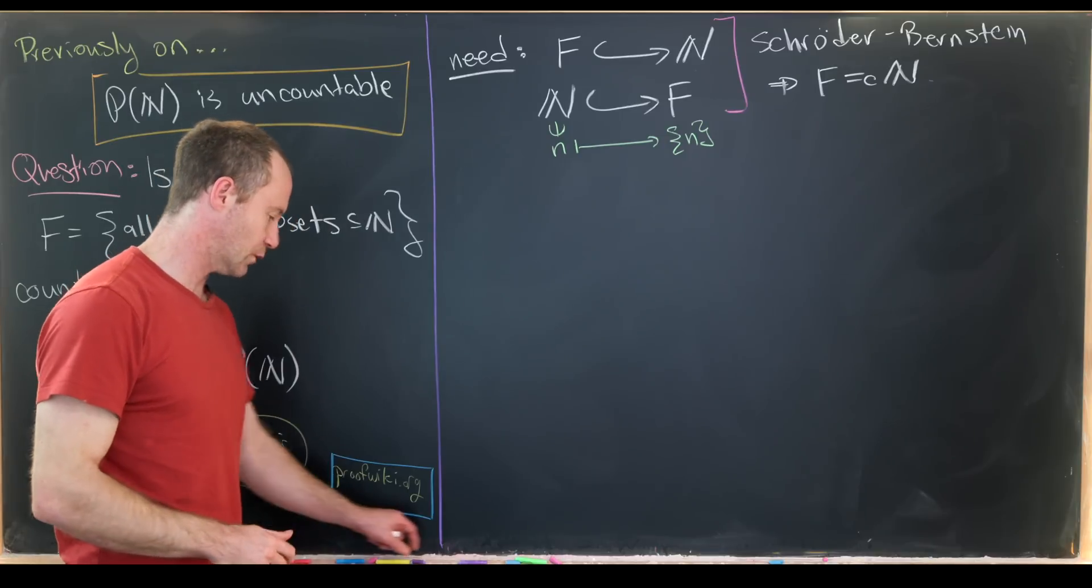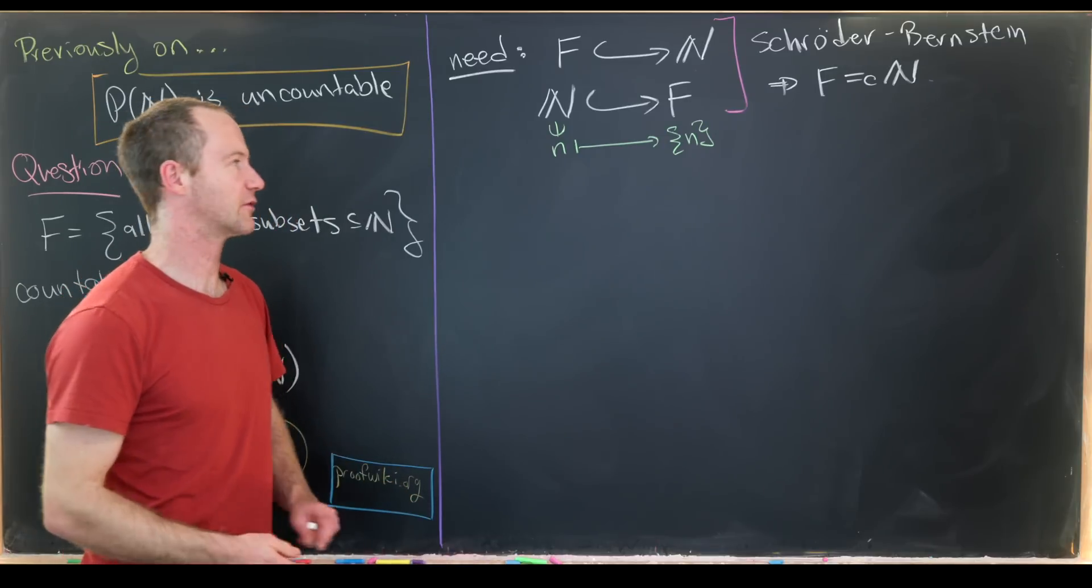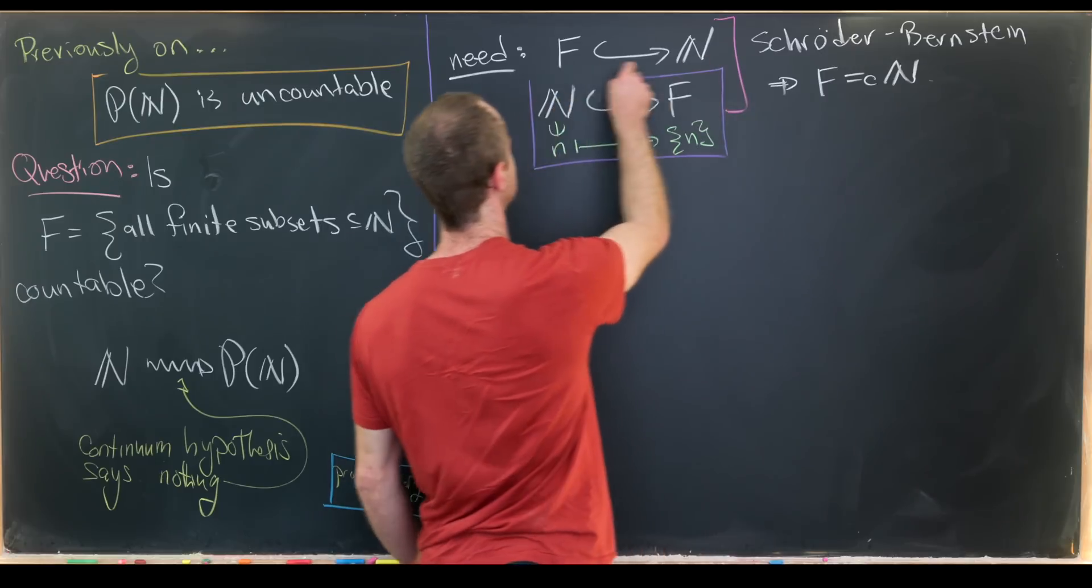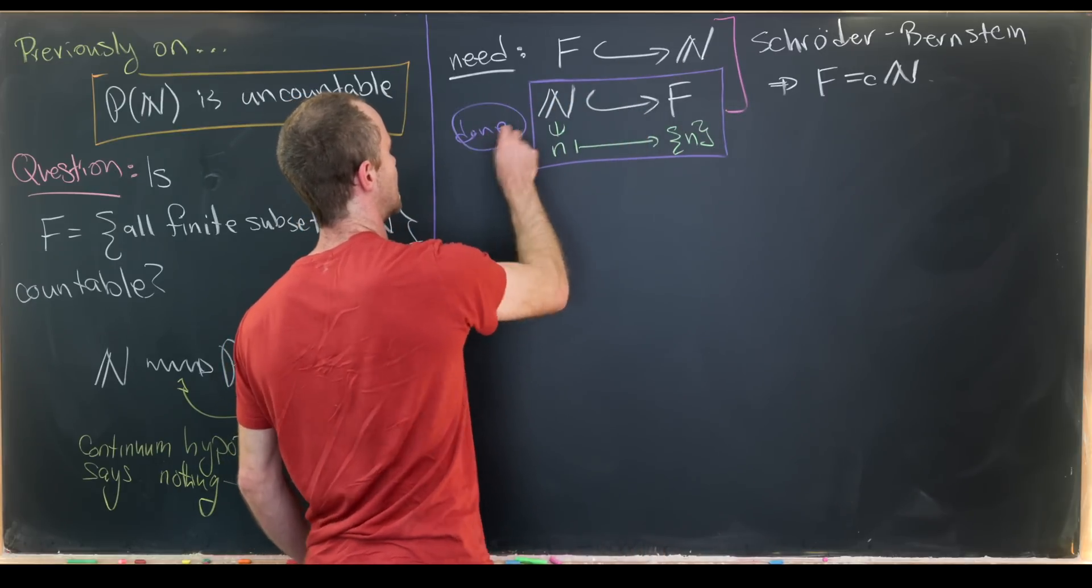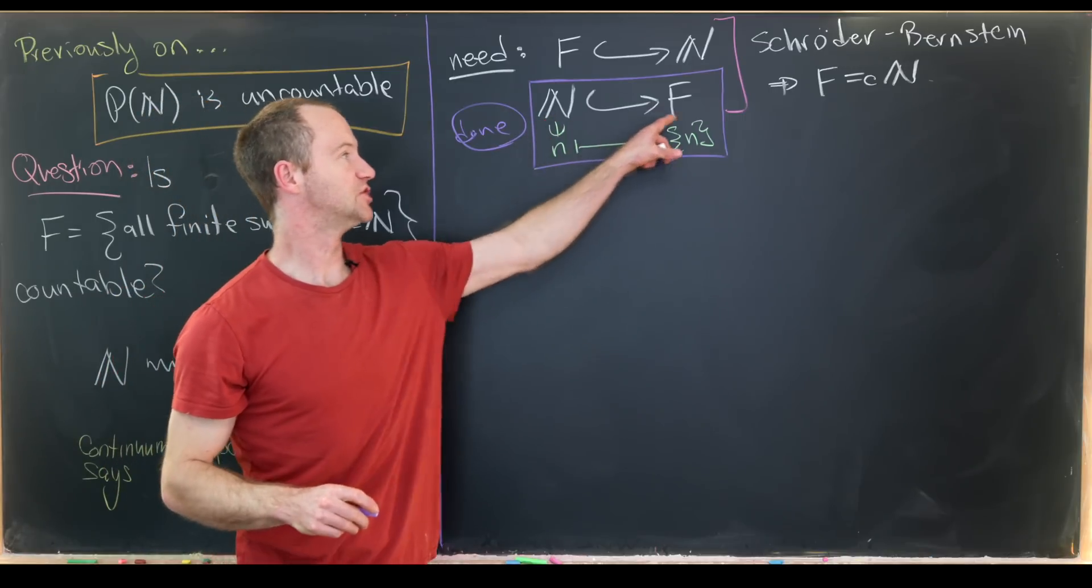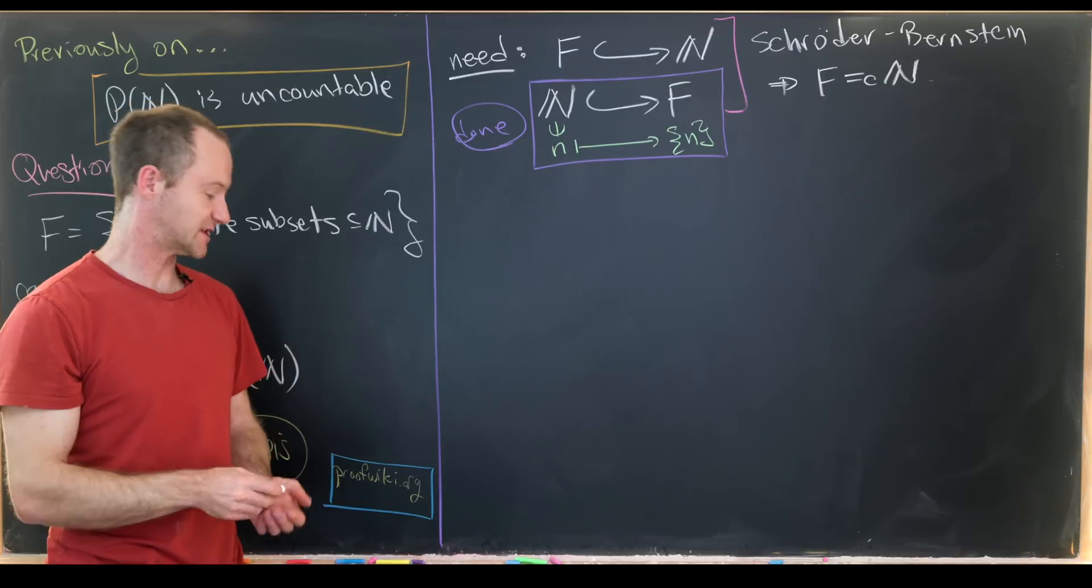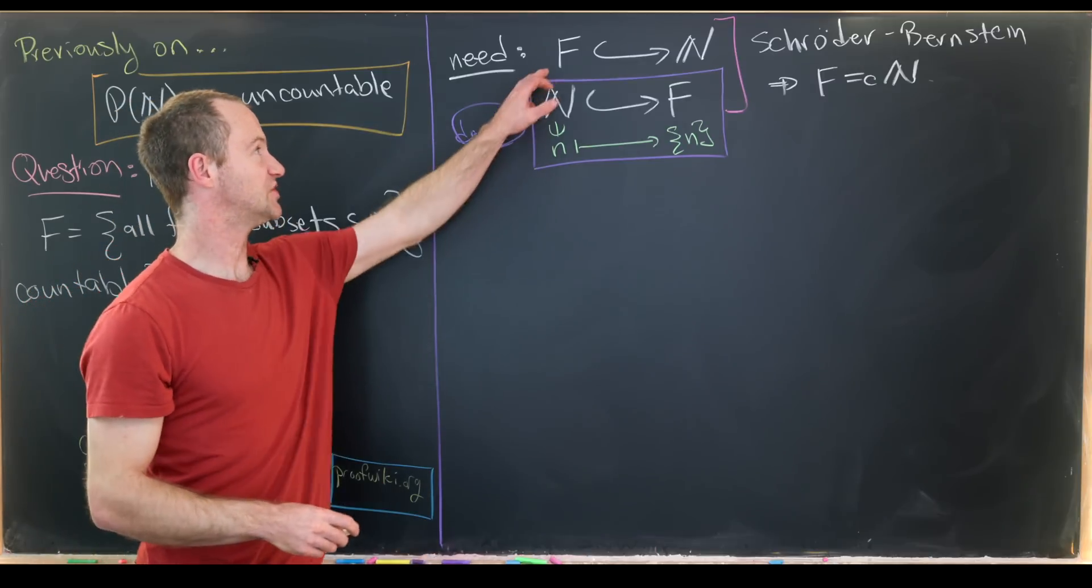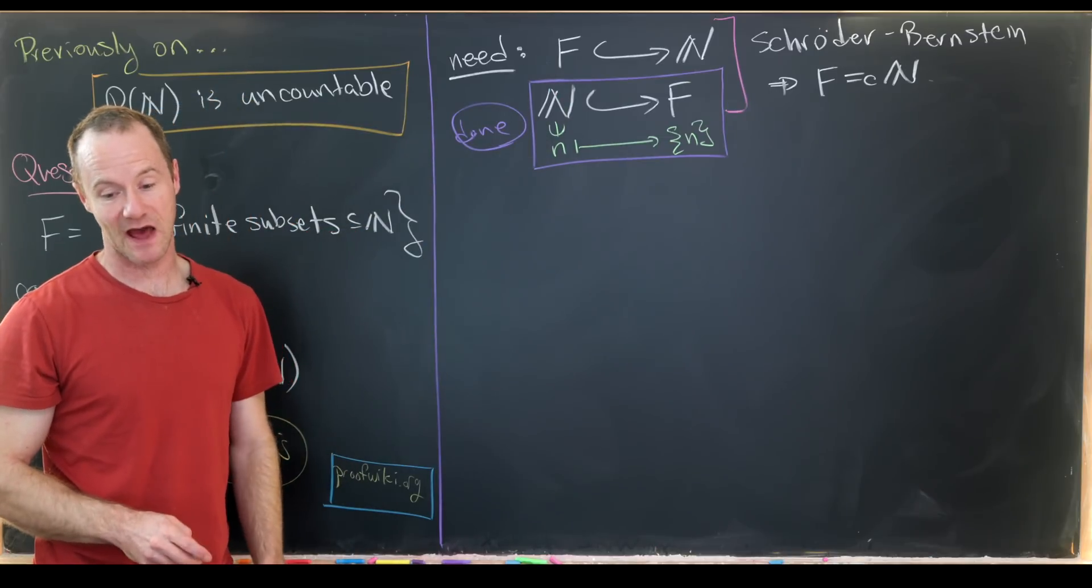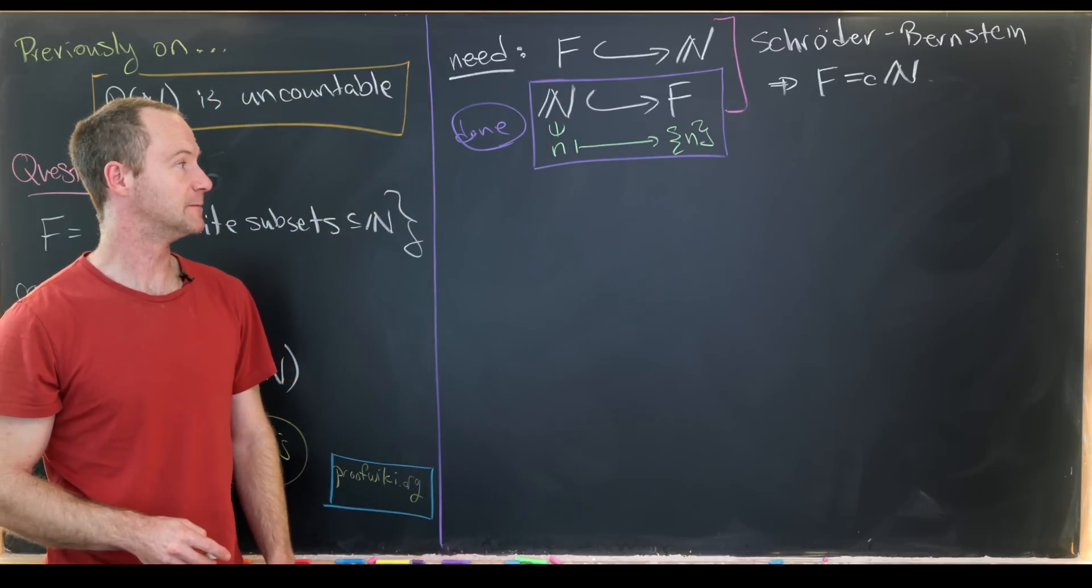So let's reiterate what we need to do. We're done with the part where we show there's an injection from N to the set of all finite subsets of N. Now we just need to find an injective map, a one-to-one map from F to N.